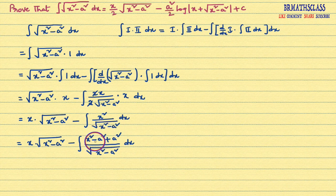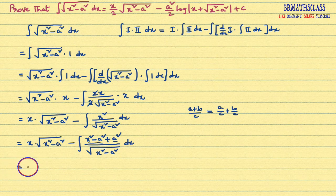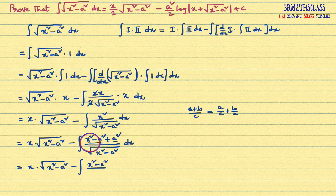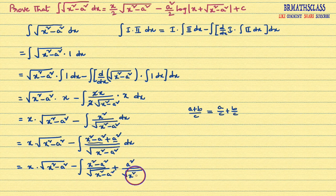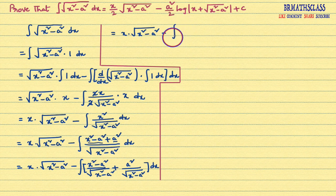Here I need x square minus a square in the numerator. So in the numerator I will subtract a square and add a square: x square minus a square plus a square — the minus a square plus a square cancels, giving x square only. I need x square minus a square, that's why I first wrote minus a square then plus a square.